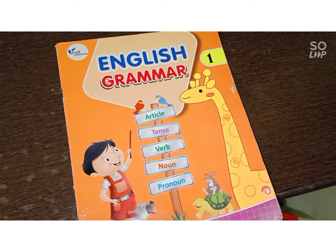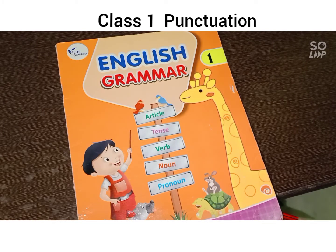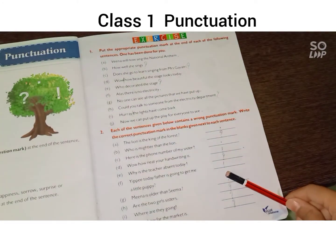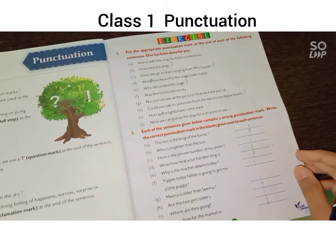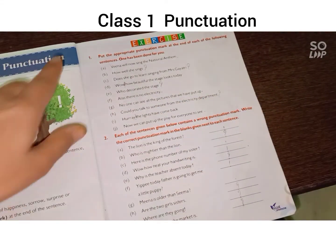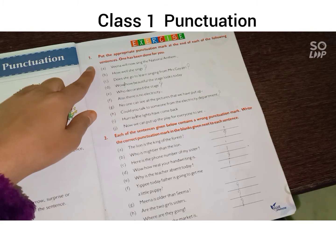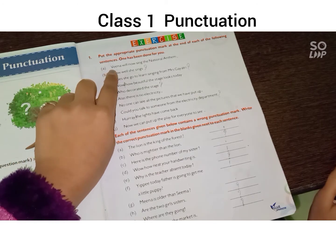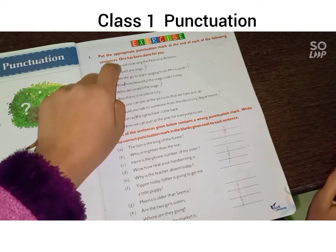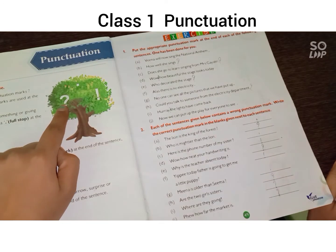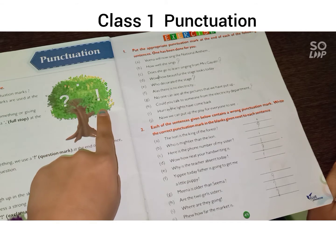Good morning students, welcome to the online class. Today we have English grammar class. Open your books on page 49, exercise chapter 16: put the appropriate punctuation mark at the end of each of the following sentences. One has been done for you. Here you have done this one, and here you have to put the mark.